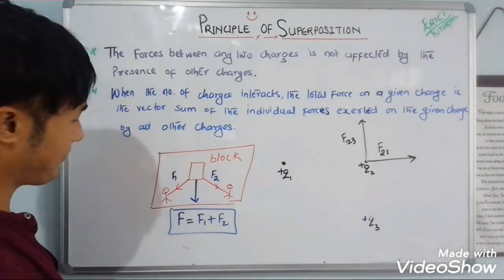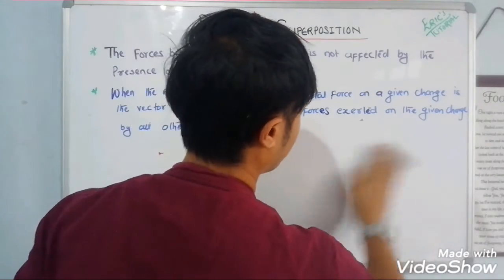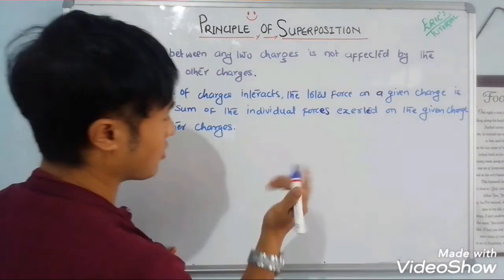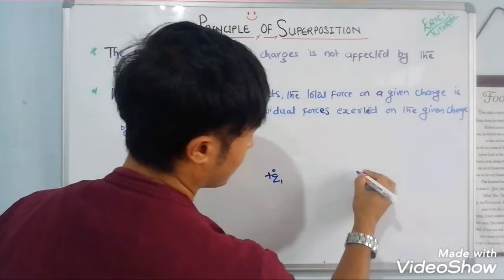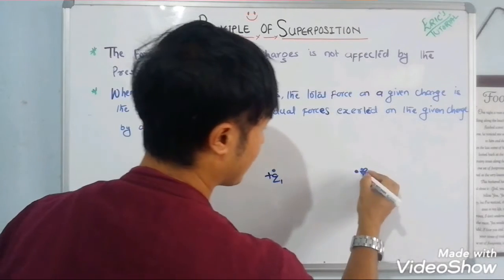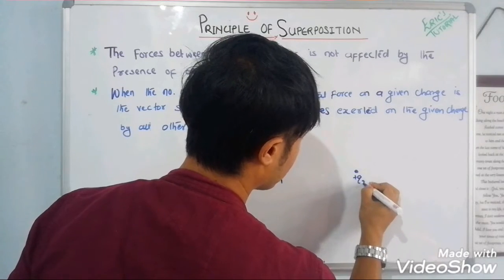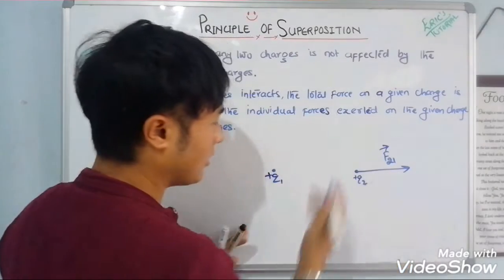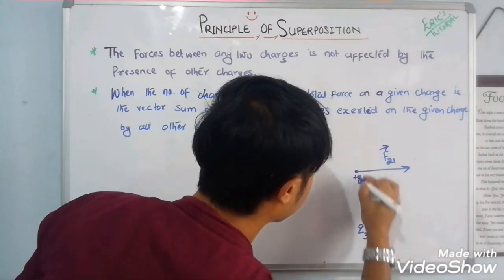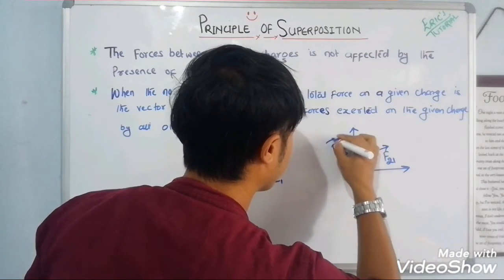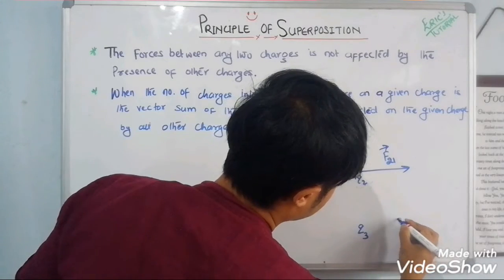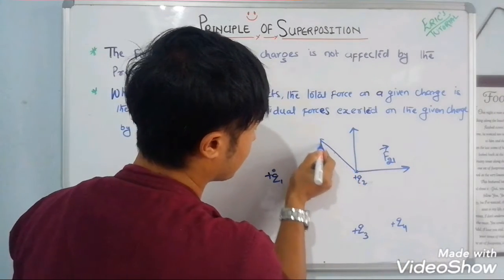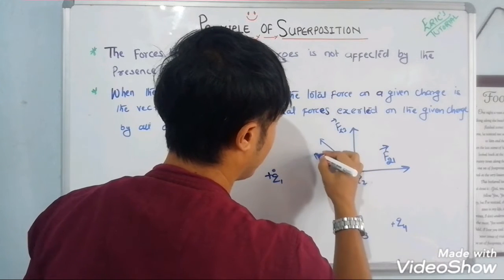Now for the second point: let me revisit my scenario. We had plus q1 and plus q2. q2 was experiencing a force, which I'll write with vector notation — F21 (vector). Now I'll also introduce plus q3 and plus q4. So the forces on q2 are: F21, F23, and F24 — from charges q1, q3, and q4 respectively.